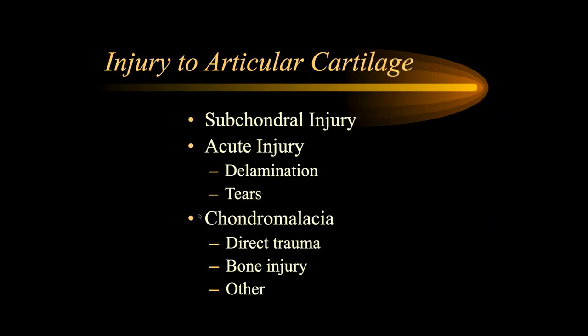Let's look at more acute injuries to articular cartilage. The subchondral bone and cartilage are very important and work together. The subchondral bone is a substrate supporting the articular cartilage. The cartilage is very deformable but easily torn if not well supported. The subchondral bone is tough but can shatter on impact, while the overlying cartilage can give way and not be injured. So with many injuries you can have a subchondral injury with intact overlying articular cartilage initially.